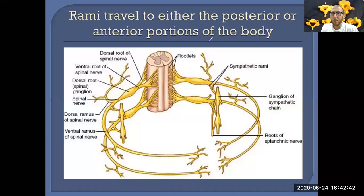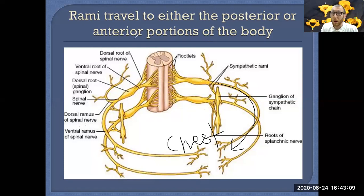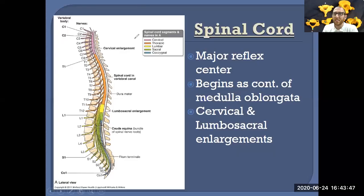The ventral ramus travels all the way out — all the way to the chest, for example. It wraps all the way around the front from the spinal cord. We then transition into how the spinal cord exits through the bony landmarks of the vertebral column, seeing a great view of the spinal cord and different spinal nerves, which match up with the vertebral column almost exactly.